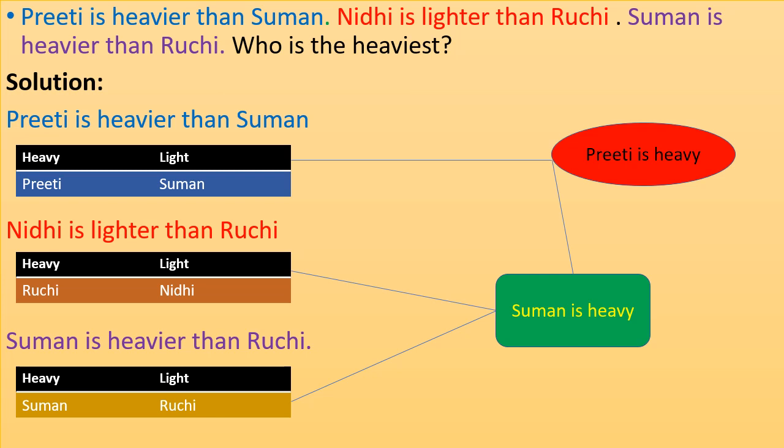Now solve the question step by step. First step is Priti is heavier than Suman. So we will make a table of heavy and light. Heavy is Priti, lighter is Suman. Now second step is Nidhi is lighter than Ruchi. Again we will make a table of heavy and light. And heavier is Ruchi, lighter is Nidhi.